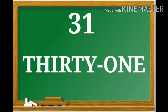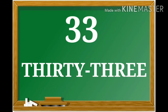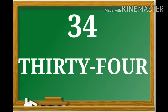31: T-H-I-R-T-Y, 30, O-N-E, 1 — thirty-one. 32: T-H-I-R-T-Y, 30, T-W-O, 2 — thirty-two. 33: T-H-I-R-T-Y, 30, T-H-R-E-E, 3 — thirty-three. 34: T-H-I-R-T-Y, 30, F-O-U-R — thirty-four.